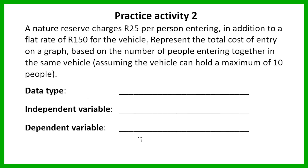The next example: a nature reserve charges 25 rand per person entering, in addition to a flat rate of 150 rand for the vehicle. Represent the total cost of entry on a graph based on the number of people entering together in the same vehicle, assuming the vehicle can hold a maximum of 10 people. You need to determine what the data type is — is it continuous or discrete? — and identify the independent and dependent variables. I'll give you a few seconds to work those things out.